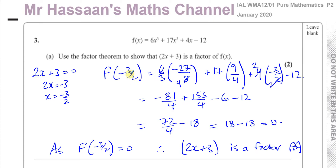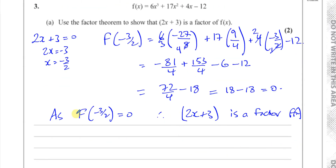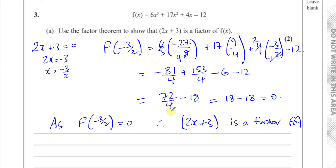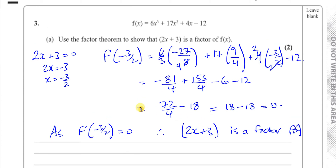What we did here is we found the value of x that caused the bracket to be 0, and we showed clearly, showing our steps, that when we substitute minus 3 over 2 into this function, we ended up with 0. So as f(−3/2) equals 0, therefore 2x plus 3 is a factor of f(x). That last statement is very important to write down — it's a qualifying statement confirming that 2x plus 3 is a factor. Don't just leave it at the calculation; write that concluding statement.